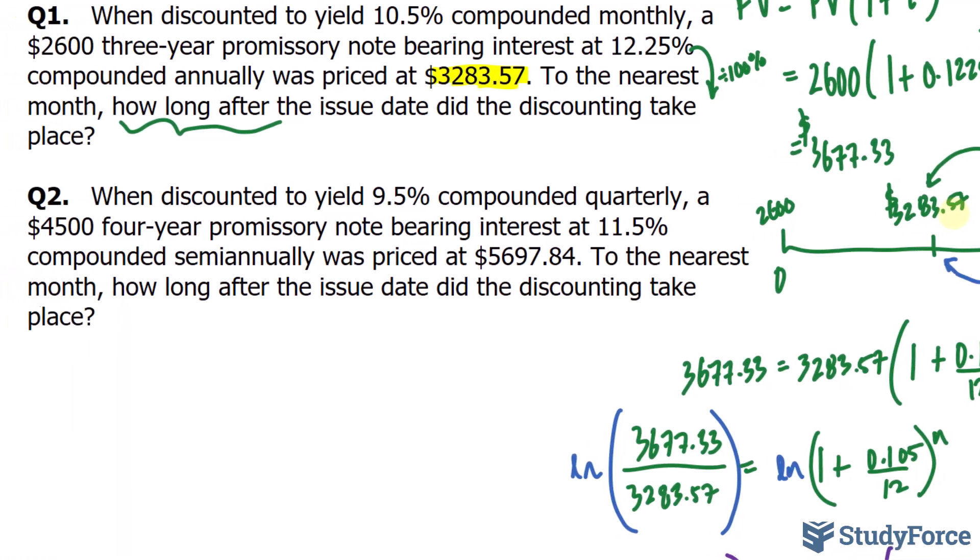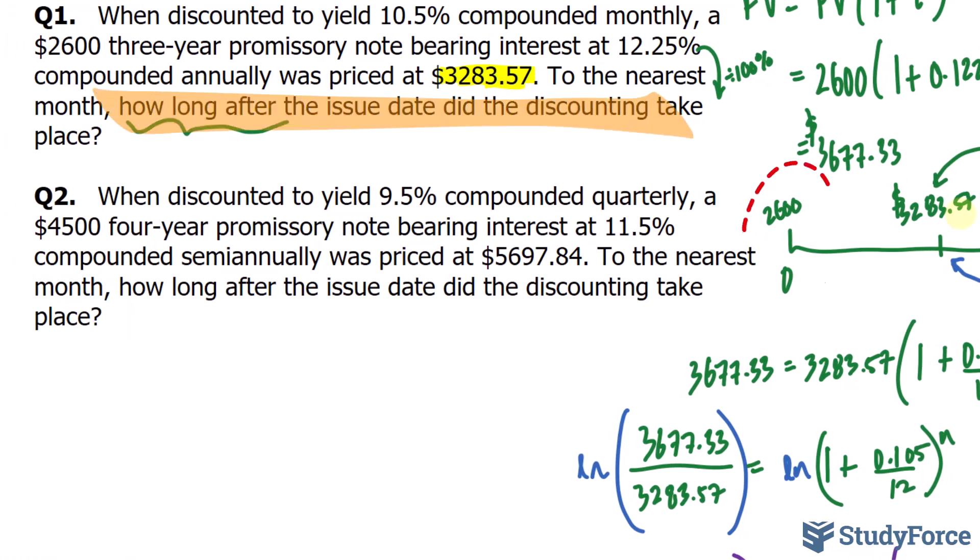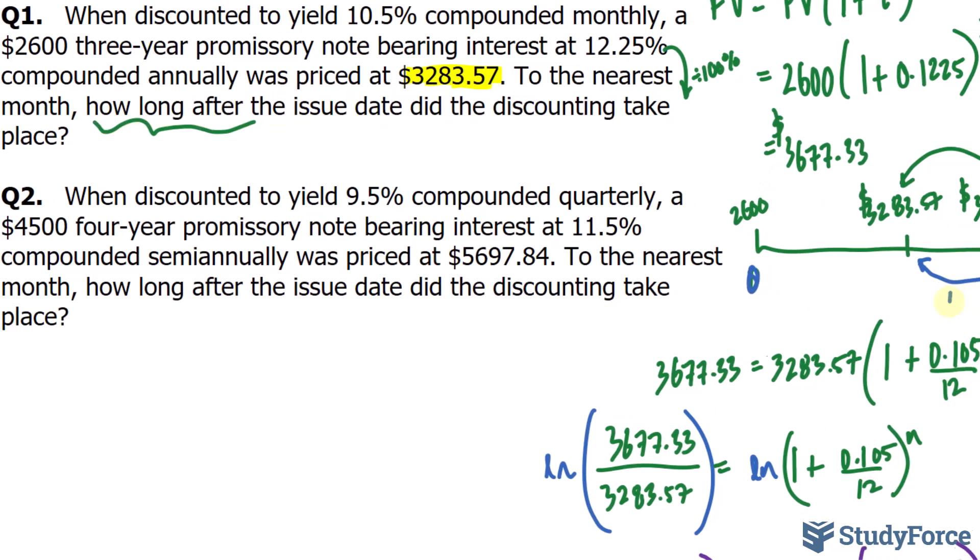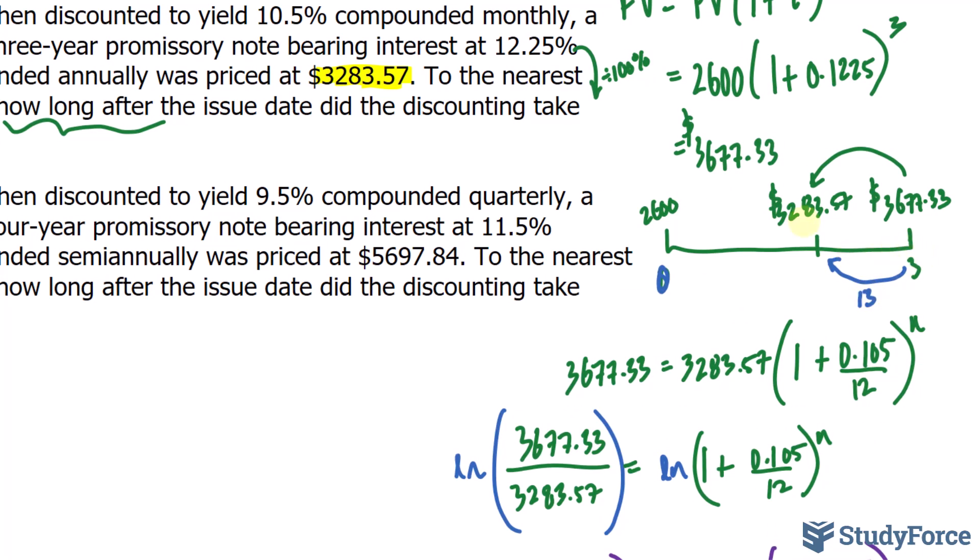So, we must discount this 13 months back to get 3283.57. But the question is saying, to the nearest month, how long after the issue date? That was the issue date. So, we know it takes 13 months to get back to 3,283.